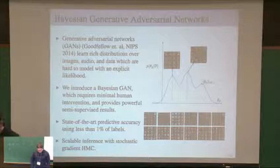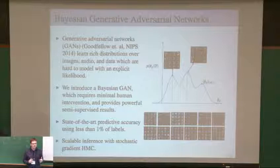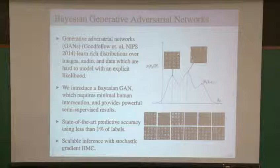In particular, we found with this Bayesian GAN model, we've been able to achieve state-of-the-art predictive accuracy on several major classification benchmarks using less than 1% of the labelled training examples. And I think, in general, this is an exciting direction for generative adversarial networks and some of these deep generative models that have been coming out of the deep learning community, like variational autoencoders.